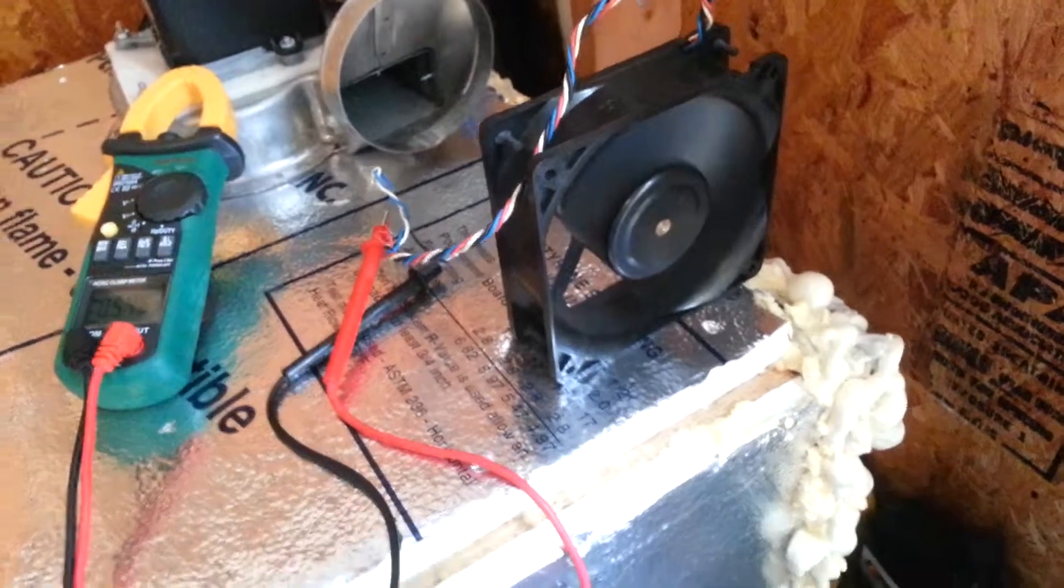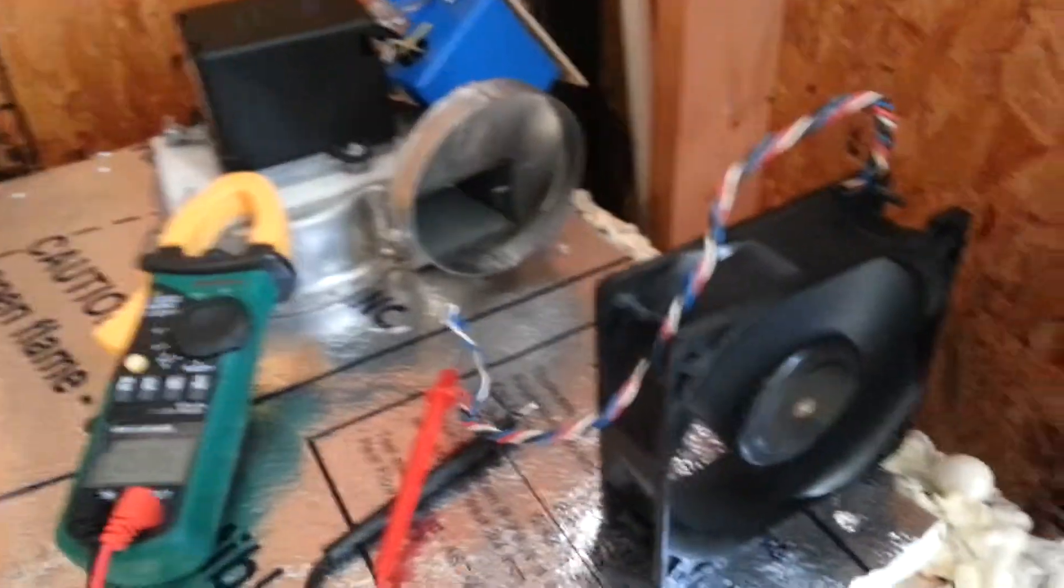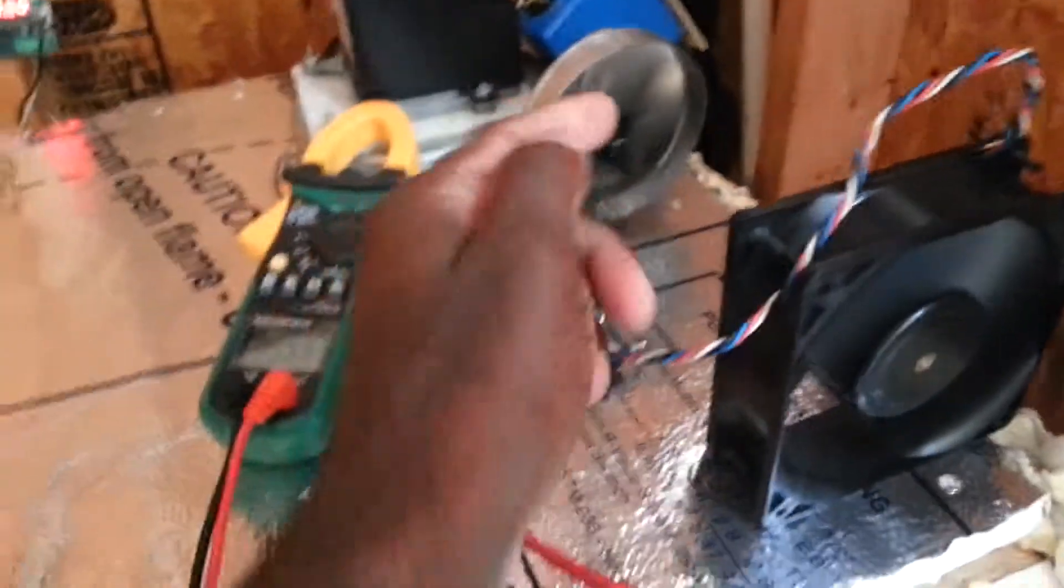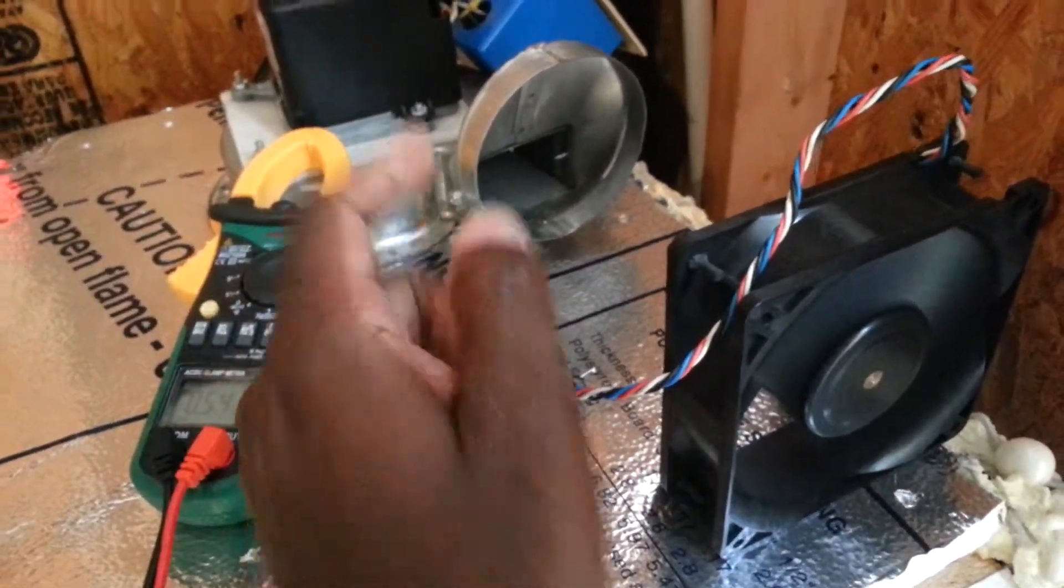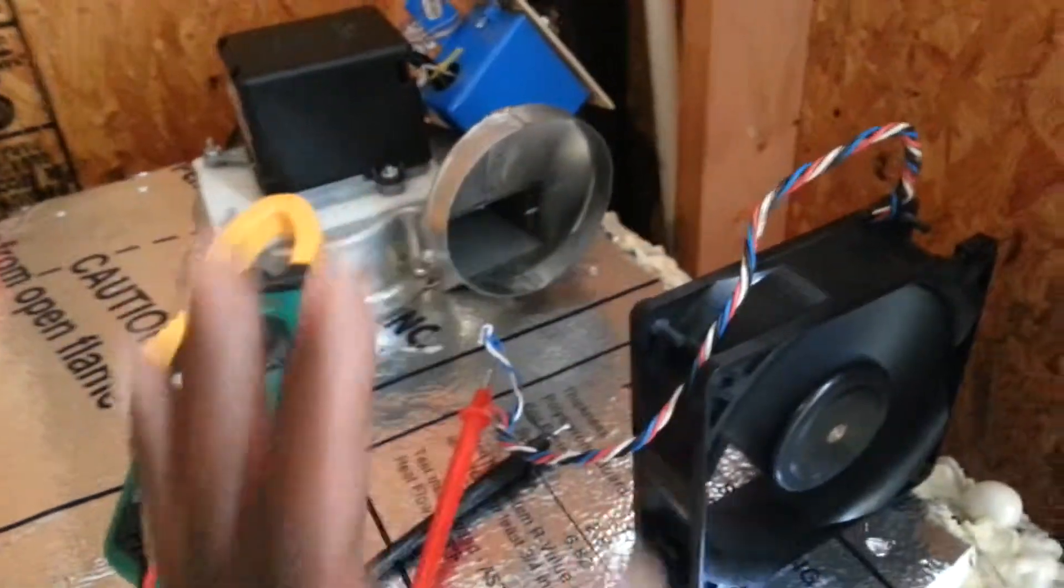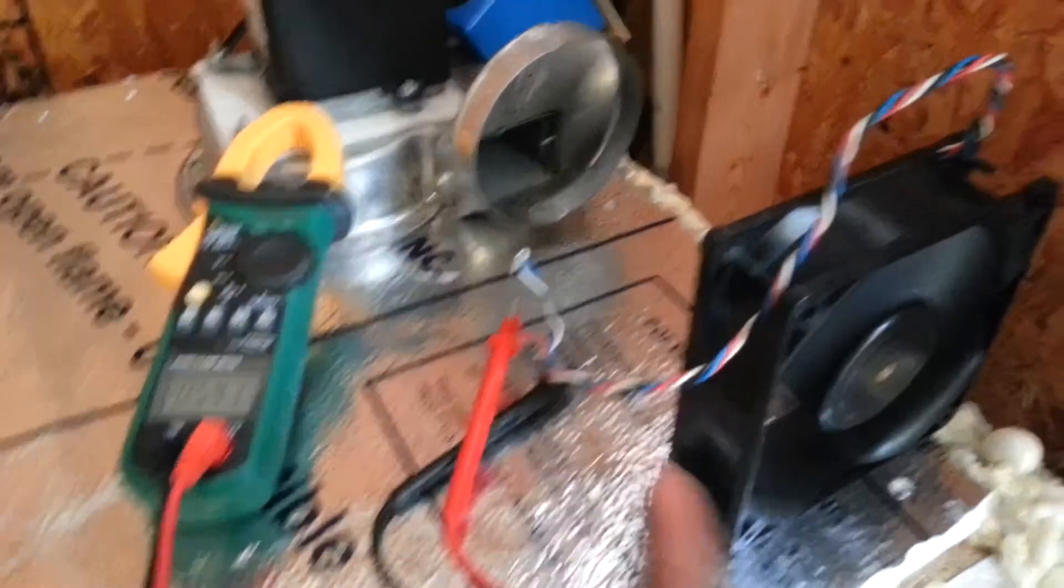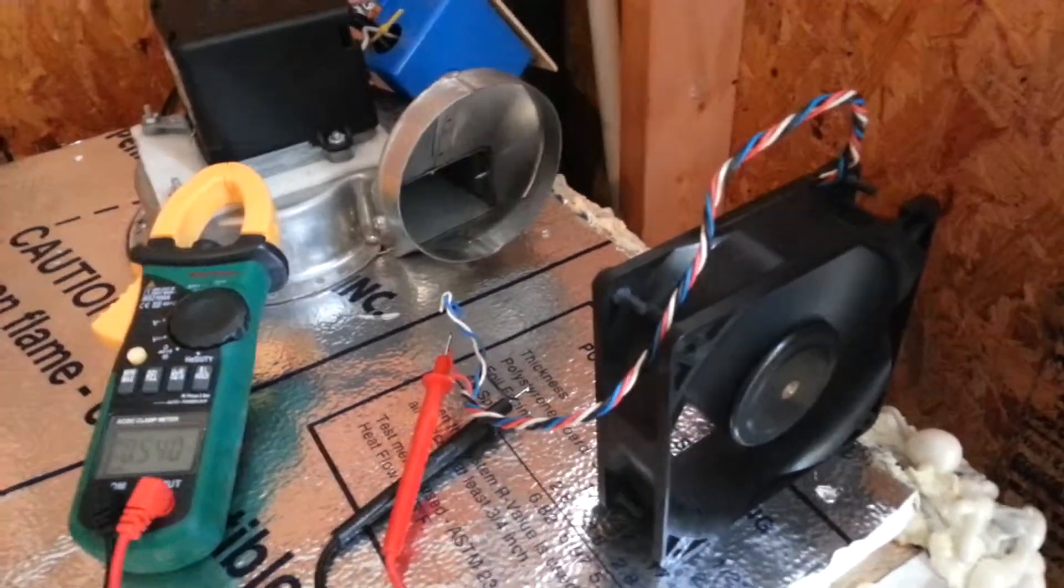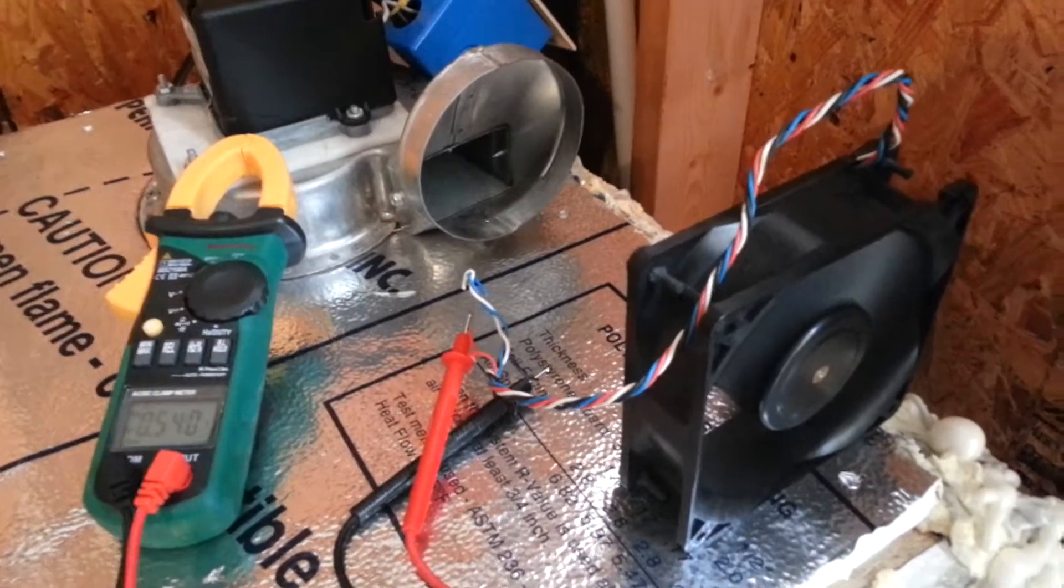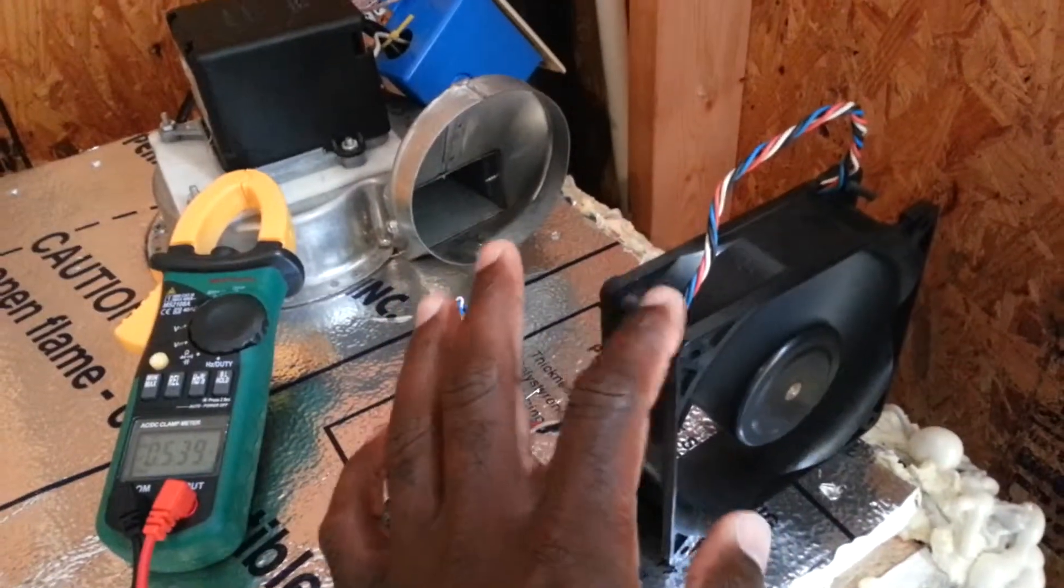There it is, it's spinning right now. Notice guys that this DC fan is not blocking the output of the inducer fan, because it's not directly in front of the inducer blower fan. Now I'm going to turn our attention to the voltmeter to see what kind of volts we're getting from this fan right here.